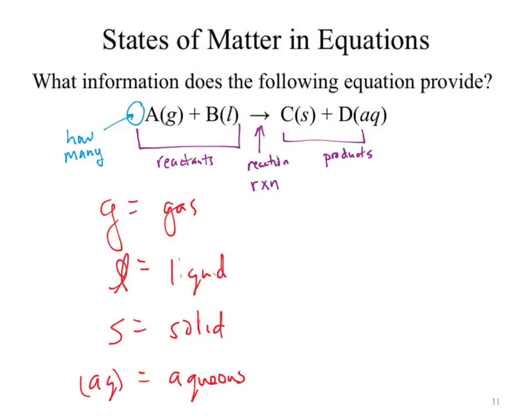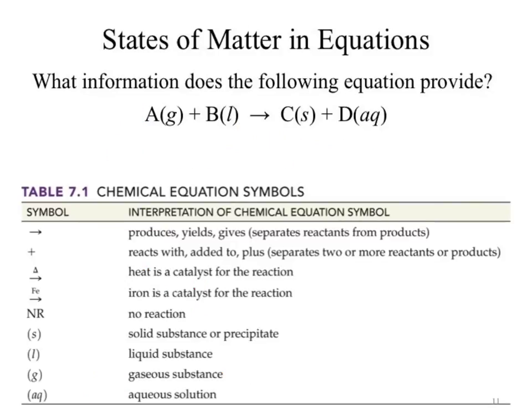We've pulled out pretty much all the information from the equation. One thing we didn't address: the plus sign. What does it mean? It separates species. C plus D are our products. If I got rid of the plus sign, it would start to look like C is bound to D — and that's not what I'm trying to say. I'm trying to say they're separate things, so I use the plus sign to separate them.